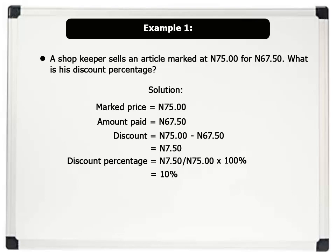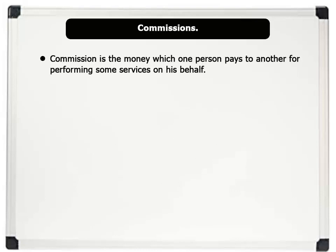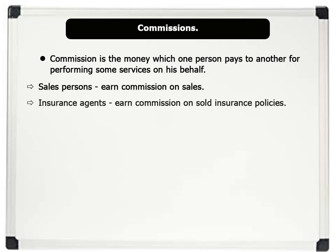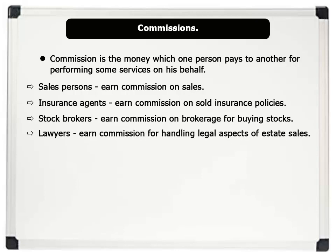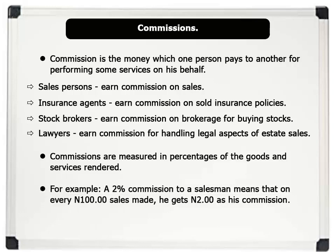Let us now discuss commissions. Commission is the money which one person pays to another for performing some services. Examples of persons who earn commissions on their jobs include: sales persons, insurance agents, stock brokers, lawyers, etc. Note: commissions are measured in percentages of the goods and services rendered. For example, a 2% commission to a salesman means that on every 100 Naira sales made, he gets 2 Naira as his commission. Let us solve some problems.